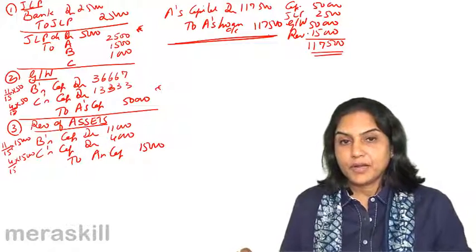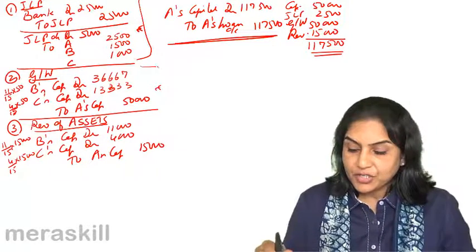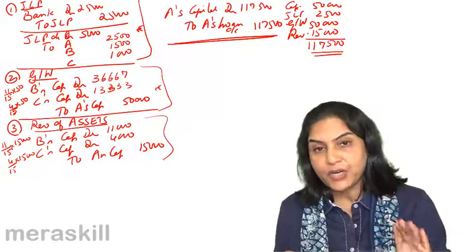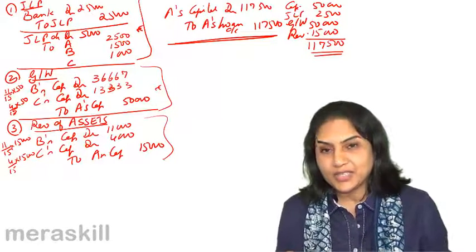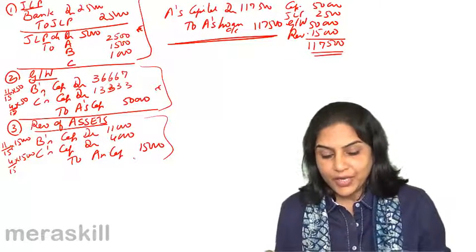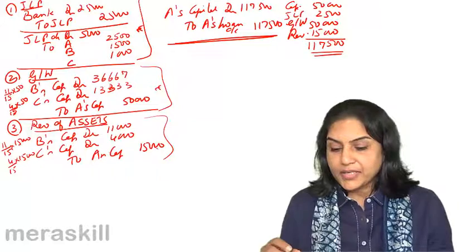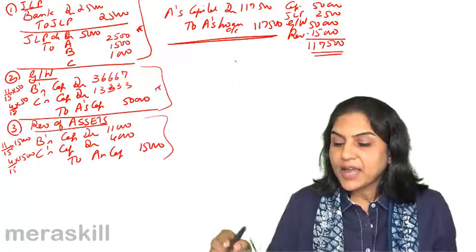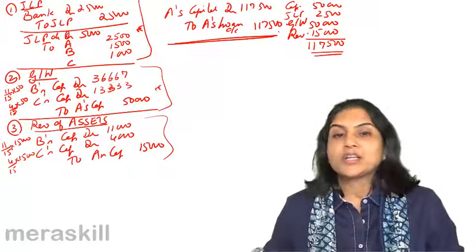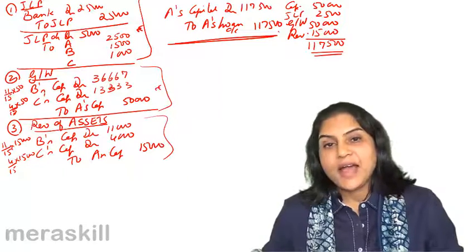We have made adjustments for the joint life policy, adjustment for goodwill, and adjustment for revaluation of assets. Mind you, assets have not been revalued — the value continues and they are shown in the balance sheet at the same value. A's share of the increase is credited to his account and corresponding debit to the gaining partners in their gaining ratio. As a result, the final balance in A's account is 1,17,500, transferred to his loan account. So we have done joint life policy, goodwill, revaluation of assets and final settlement.